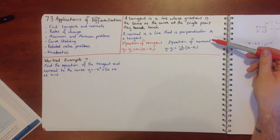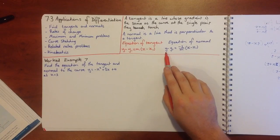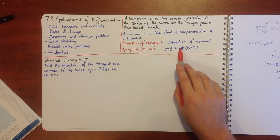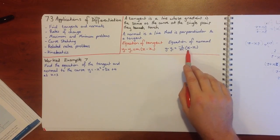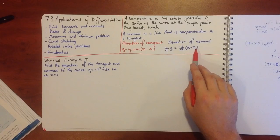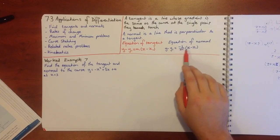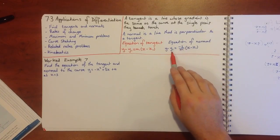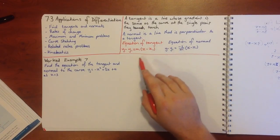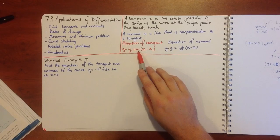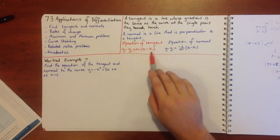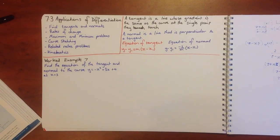The equation of our normal is very similar: y minus y1 equals negative 1 over m times (x minus x1), where m is the same gradient of our curve at the point x1, y1. So we need three things for these problems: the gradient m at our point, and the coordinates x1 and y1.